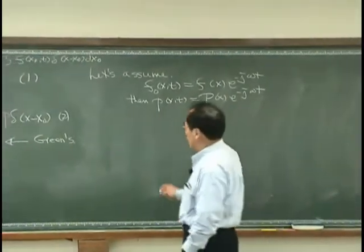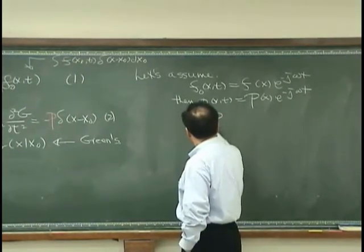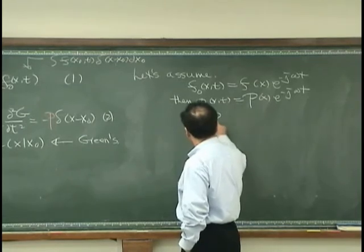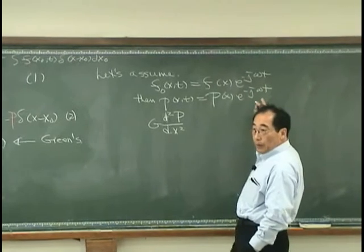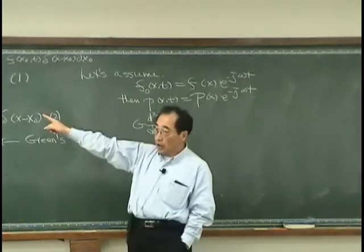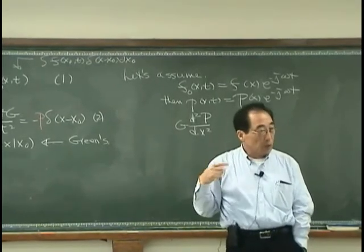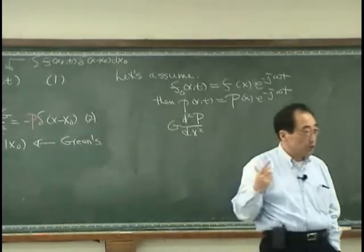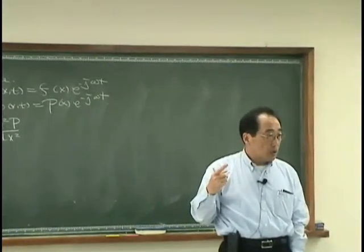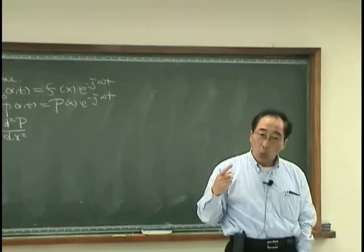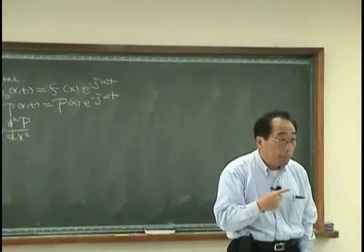Then the equation I have would be g d²p/dx², not partial, d²p/dx². Now, because I am putting this assumption over there, in other words, I am assuming the solution is harmonic in time. In other words, I am seeing the solution in frequency domain. In other words, I want to see the solution separately and I want to add it up.